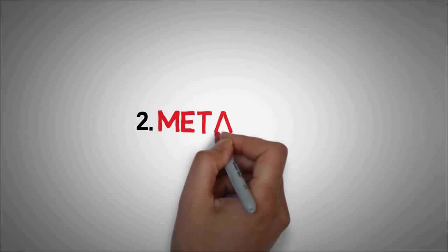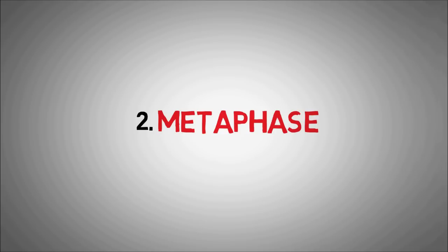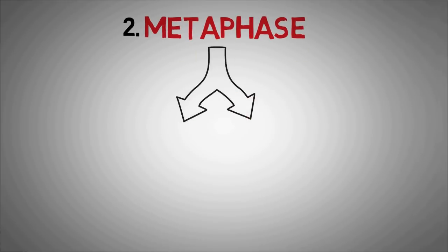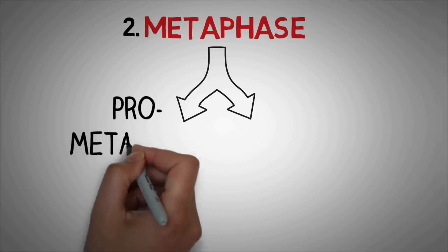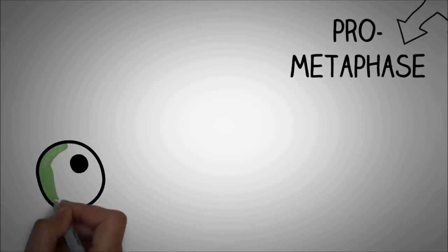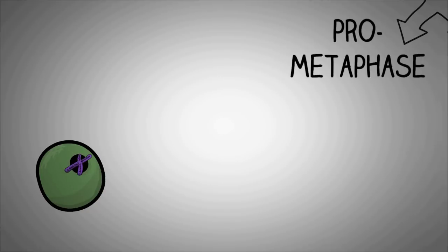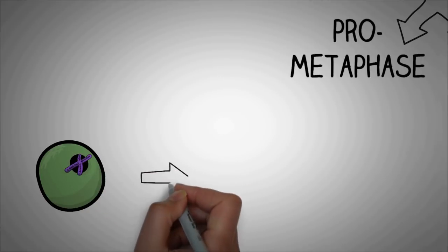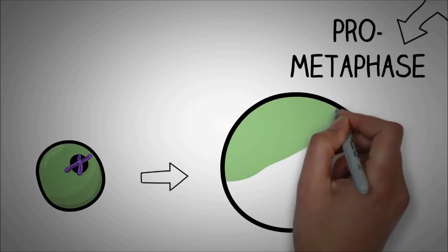Next, we have the metaphase. The metaphase is actually divided into two phases, a pro-metaphase and an actual metaphase. Now here is this cell after the prophase. The chromosomes are present in the nucleus. In pro-metaphase, the membrane around the nucleus disappears.